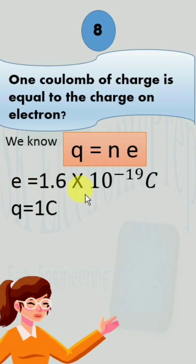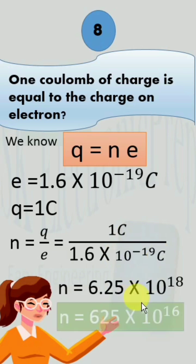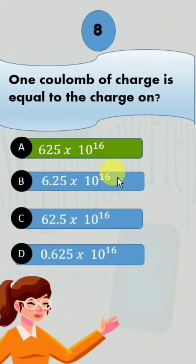Charge on 1 electron is 1.6 x 10 raised to the power minus 19 coulomb. Put the values of Q and E in the above equation, number of electrons obtained are 6.25 x 10 raised to the power 18. If we round off according to our options, then correct option is option A.